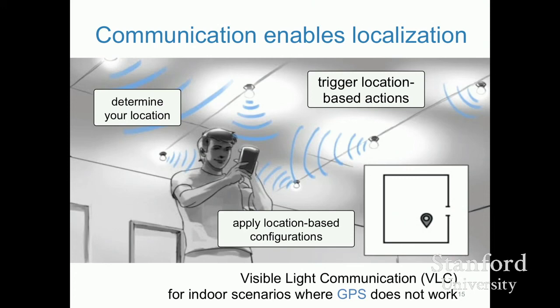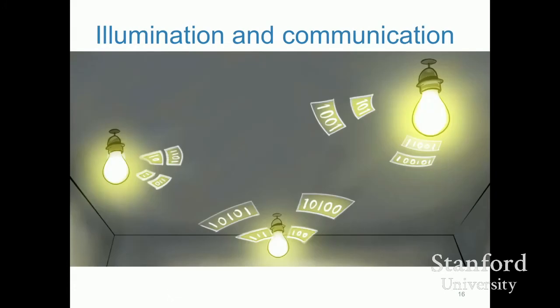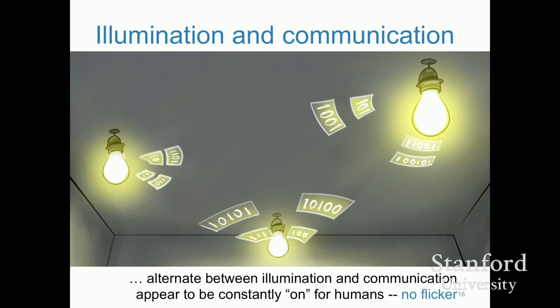To make this work, you have to reconcile using visible light for communication with using it for illumination — its usual purpose. What we do is duty-cycle the light sources: either all resources are used to communicate, or they all serve their primary purpose as an illumination source, constantly switching at a rate not noticeable by humans.